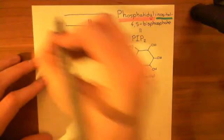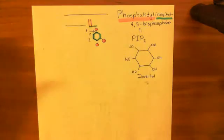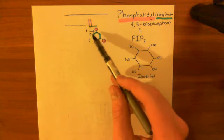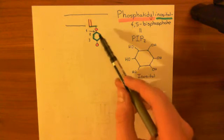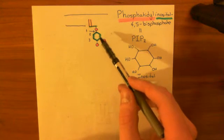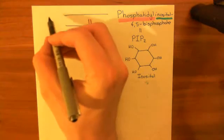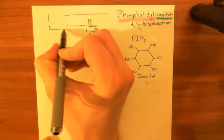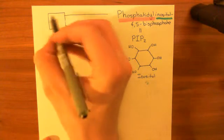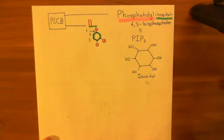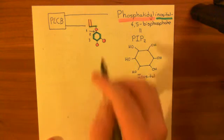This is PIP2. As you can see, it's pretty much just a modified phospholipid — a phosphatidate molecule with a bigger head. It's got this inositol and these two phosphate groups stuck off it. Essentially it's just a normal phospholipid with a bigger head, so this is a normal component of the phospholipid bilayer within cells — within the phospholipid bilayer of the cardiomyocytes. Here is the enzyme we have now activated, phospholipase C beta. What is phospholipase C beta going to do with this PIP2 molecule?